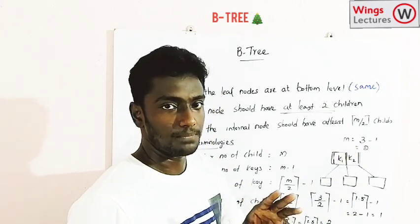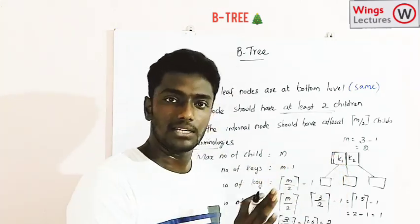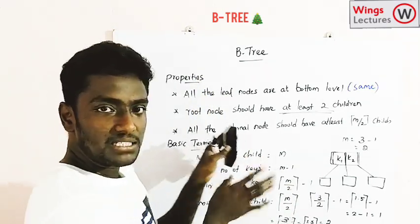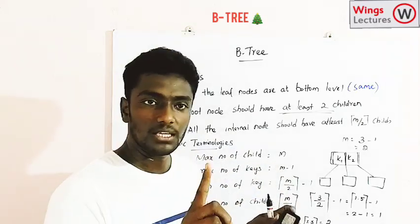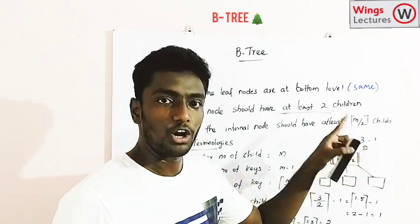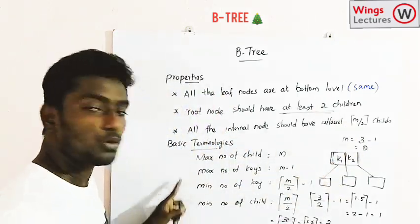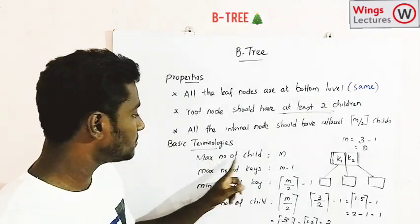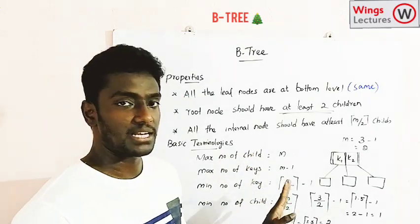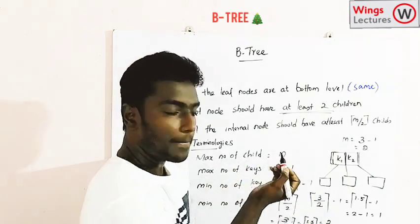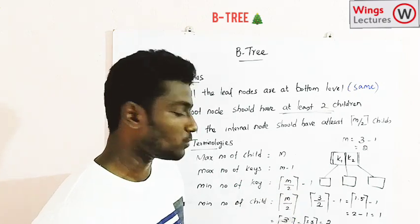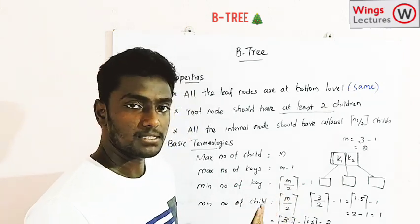It's slightly complex compared to other tree structures. To summarize the key formulas: maximum number of children is m; maximum number of keys is m minus 1; minimum number of keys is ceiling of m/2 minus 1; and minimum number of children is ceiling of m/2. These formulas are very important and you should keep them in mind when working with B-trees.